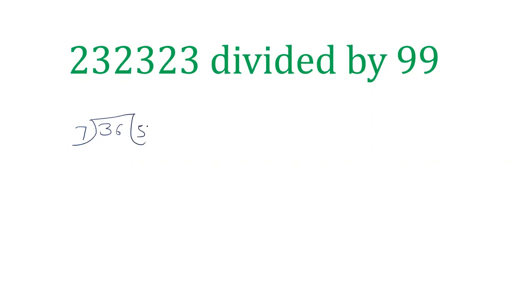First let us understand what is remainder. Take the number 36 divided by 7. Seven fives are 35, so the remainder is 1.